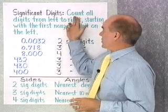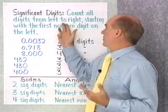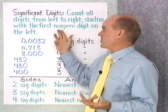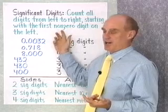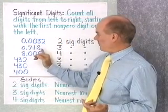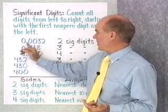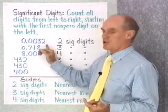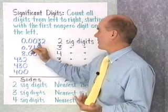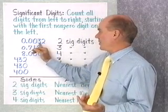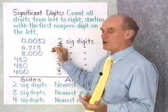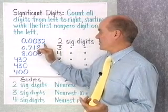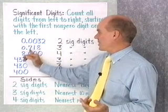For significant digits, we count all the digits from left to right, starting with the first non-zero digit on the left. For this number right here, this has two significant digits, because we start with the leftmost digit and then count all the digits from there on. So this number has two significant digits.